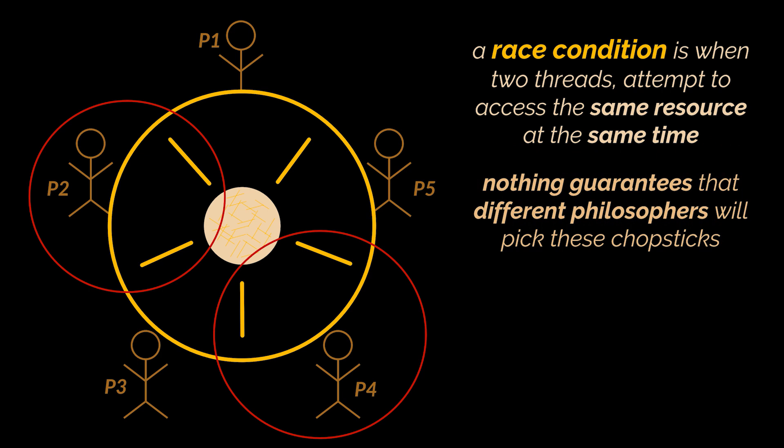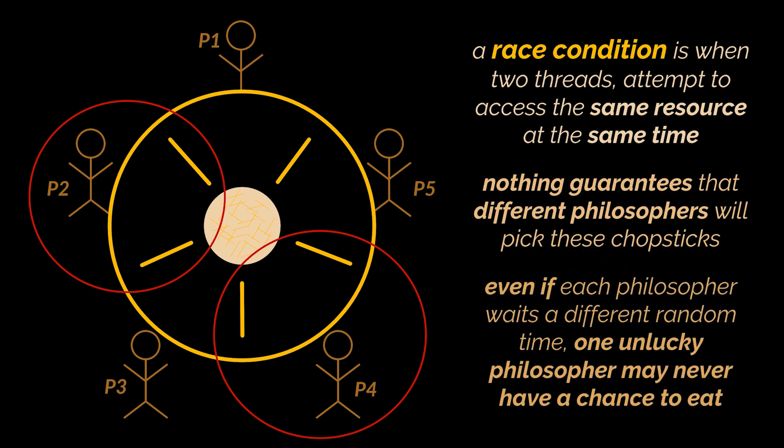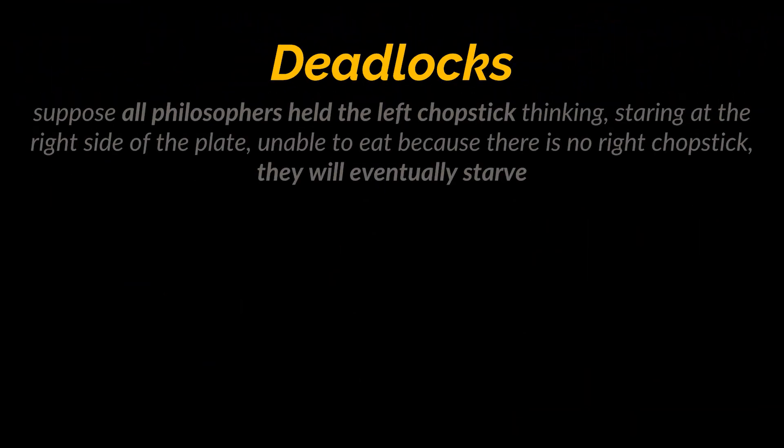After they put these chopsticks down, there is nothing that guarantees that different philosophers are going to pick these chopsticks. Maybe the same philosophers will win the race and will get hold of these resources, and maybe after an undetermined amount of time, one of the philosophers will never have a chance to eat and die. Even if each philosopher waits a different random time, one unlucky philosopher may starve.